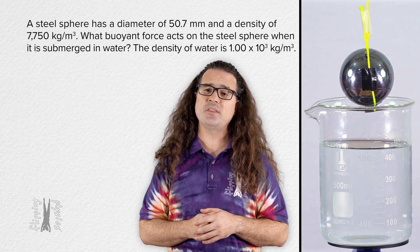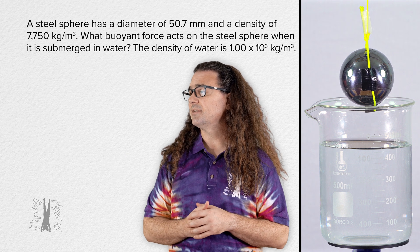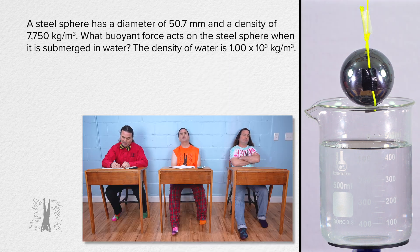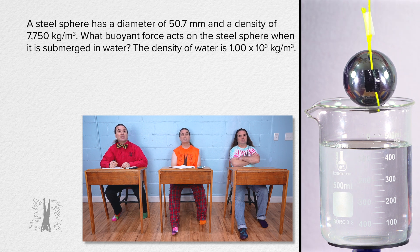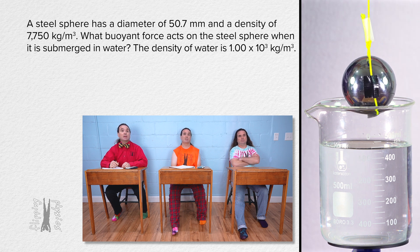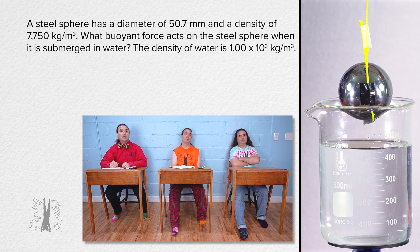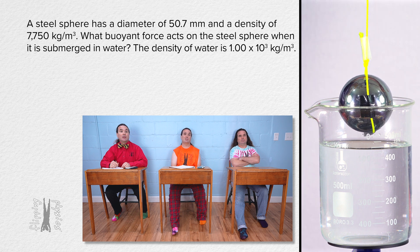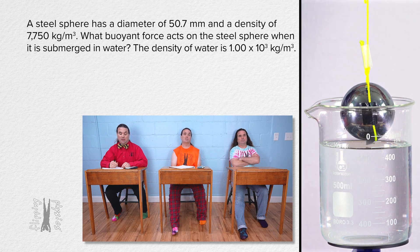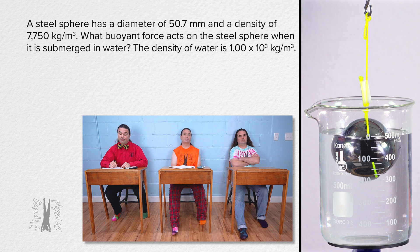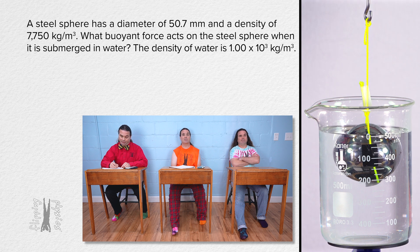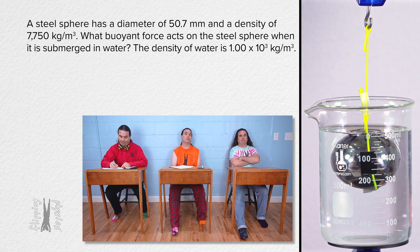Bobby, please read the problem and Bo, please translate. A steel sphere has a diameter of 50.7 millimeters and a density of 7,750 kilograms per meter cubed. What buoyant force acts on the steel sphere when it is submerged in the water? The density of water is 1.00 times 10 to the third kilograms per meter cubed.